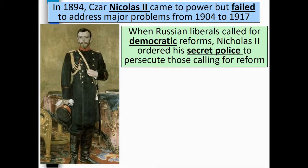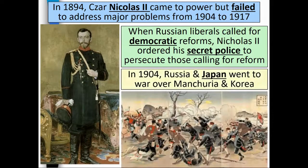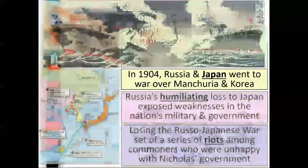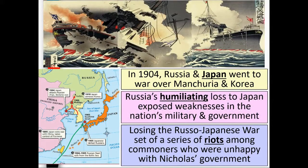When Russian liberals called for democratic reforms, Nicholas II ordered his secret police to persecute those calling for reform. In 1904, Russia and Japan went to war over Manchuria and Korea. Losing the Russo-Japanese War set off a series of riots among commoners who were unhappy with Nicholas' government.